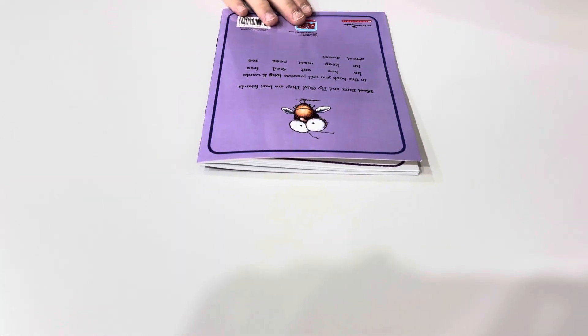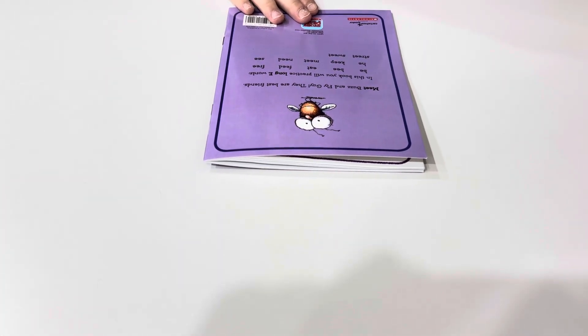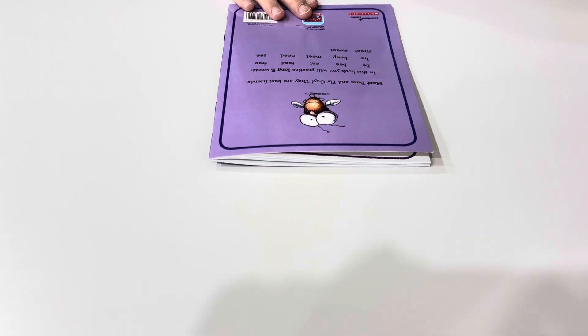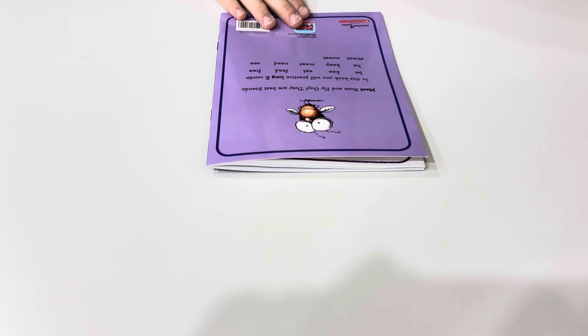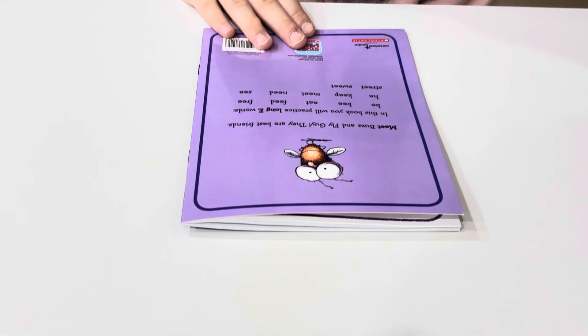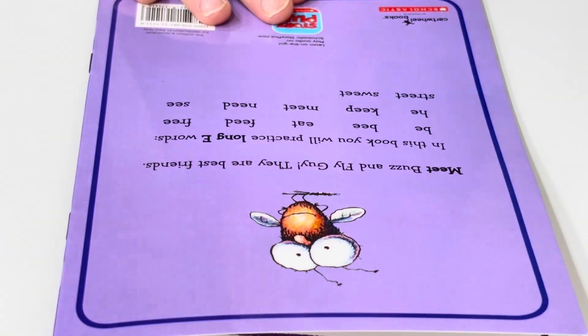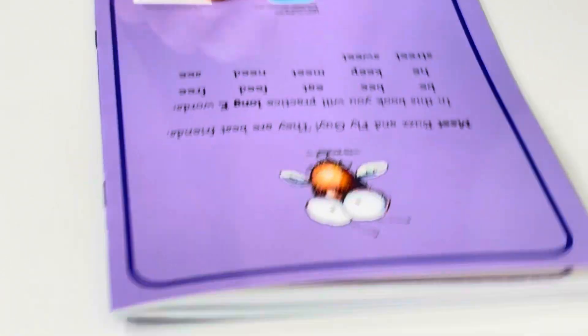In this book, you will practice long E words. Be. Eat. Feed. He. Keep. Meet. Need. See. Street. Sweet.